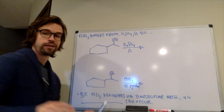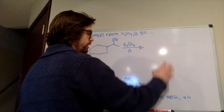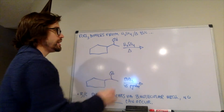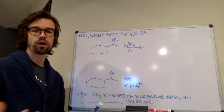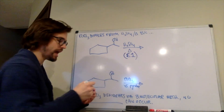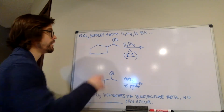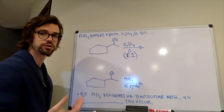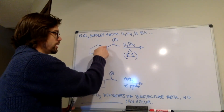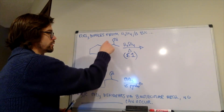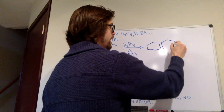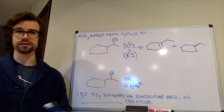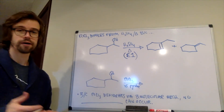Pause the video right now and predict the products — what's going to form with each set of conditions? With H2SO4 and heat, a secondary alcohol goes by an E1 mechanism. It's going to protonate, become a good leaving group, the alcohol will leave, generating a secondary carbocation. A hydride shift could occur to give a tertiary carbocation, then we could form alkenes here or there. So the major products are going to be split between two products — not ideal. Organic chemists want to make things at very high yield, and here we're splitting yield between two major products.